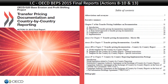Action 13 establishes a three-tier documentation system. The master file talks about the group, group policies, and major group products. The local file goes into more detail on transactions between the local entity and other group companies. The country-by-country report is a three-page summary of where all group entities are situated, what activities they perform across eight categories such as manufacturing, sales, holding company, finance, or R&D, plus country-level figures for equity, assets, number of employees, internal and external turnover, tax paid, and profit before tax. Guidance is also provided for governments on how to exchange these reports with each other.